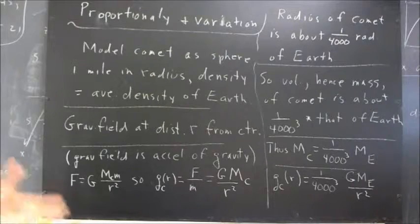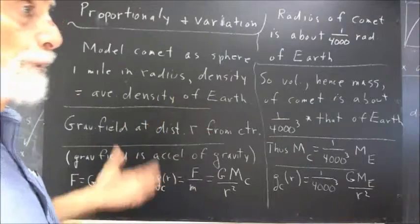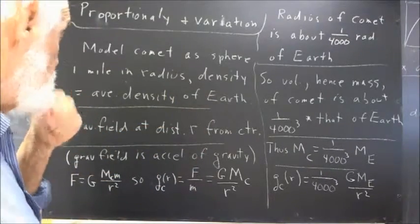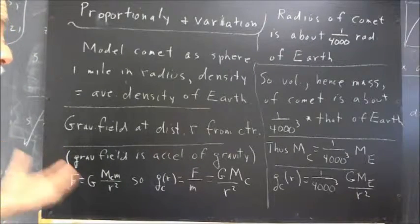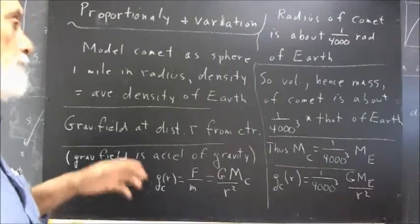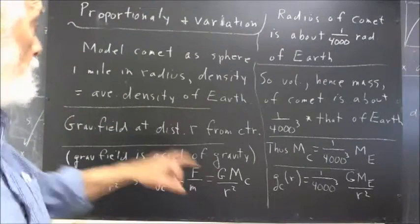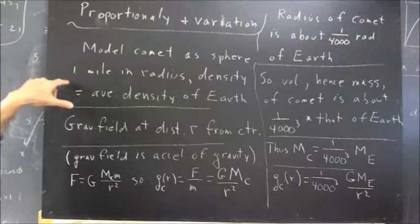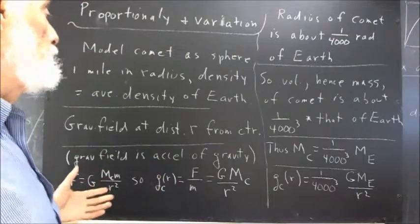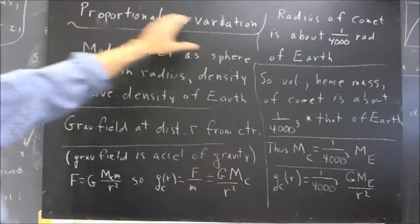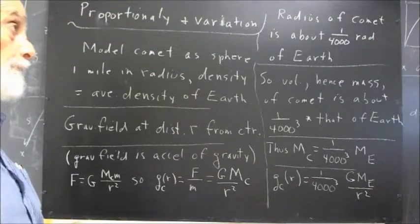Now, we could figure out the average density of the Earth. We have information on the radius of the Earth. We have information on the mass of the Earth. So, from the radius, we could calculate the volume, and we could divide the mass by the volume, get the density of the Earth. Then we could figure out the volume of the comet and multiply it by that density and get the mass of the comet. We don't have to do that. We can use proportionality and variation in a way that hopefully would be kind of illuminating here.